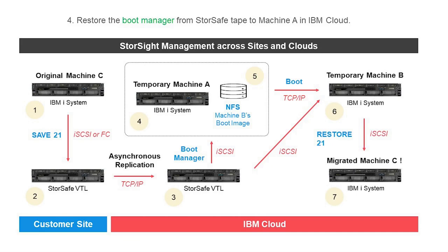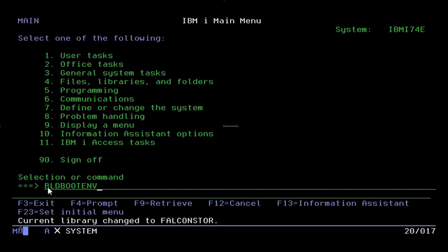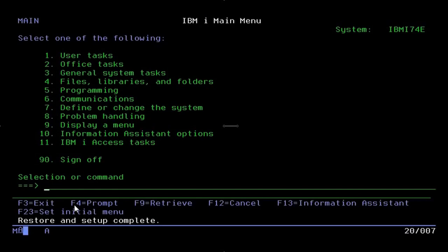Now that the two tapes have been replicated to the StoreSafe instance in the IBM or MSP cloud, it's time to do a restore of the boot manager onto Machine A. Machine A will only temporarily be needed to complete this migration process. Its role is to run the BLD BOOT ENV script, which will put Machine B's boot image onto an NFS share on Machine A. Here at the green screen console of Machine A, the BLD BOOT ENV script has successfully executed, so the NFS boot image is now ready for Machine B to use in the next step.